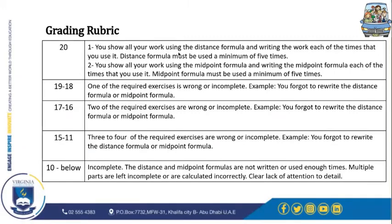Now for the grading rubric. To get full marks — which is 20 — you need to show all your work using the distance formula, writing the work for each question you use it. The distance formula must be used a minimum of five times. You also have to show all your work using the midpoint formula, writing the midpoint formula for each example. The midpoint formula must also be used a minimum of five times.